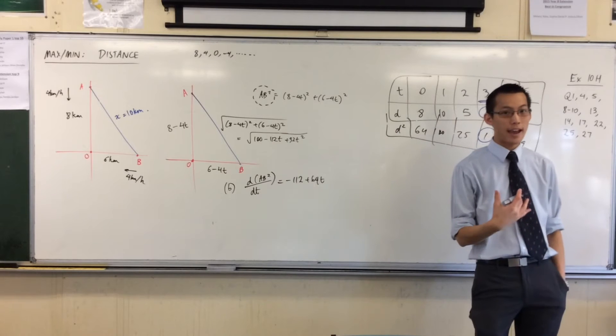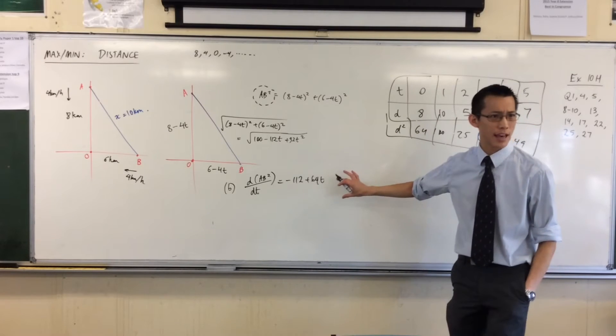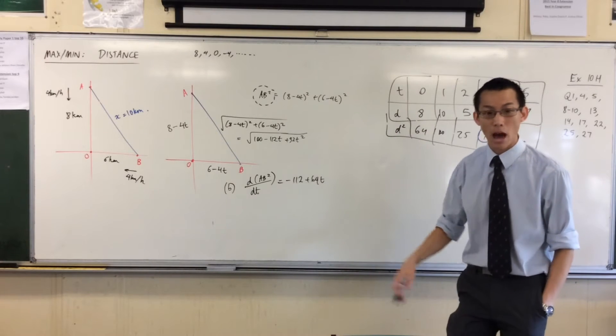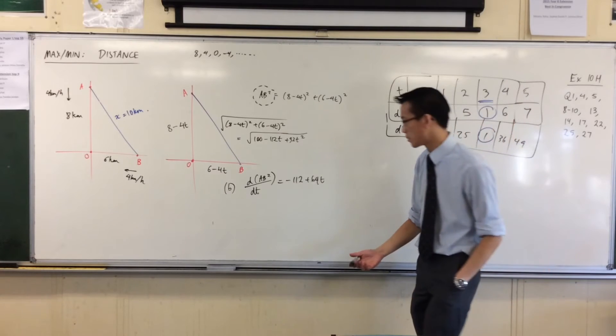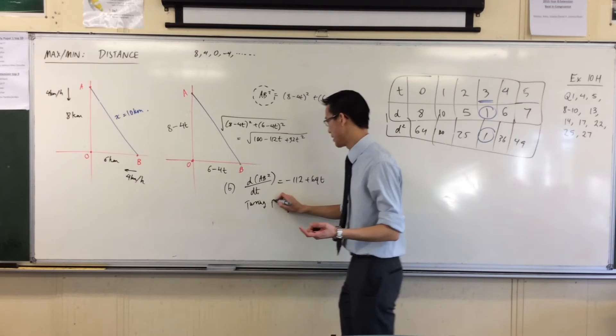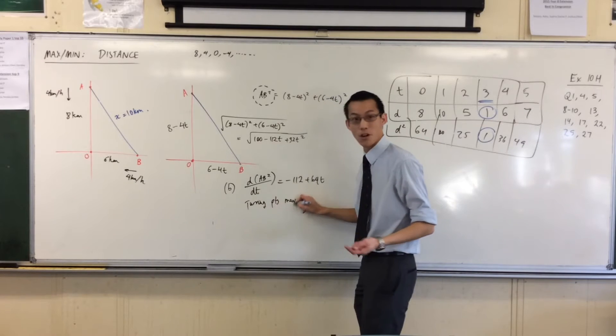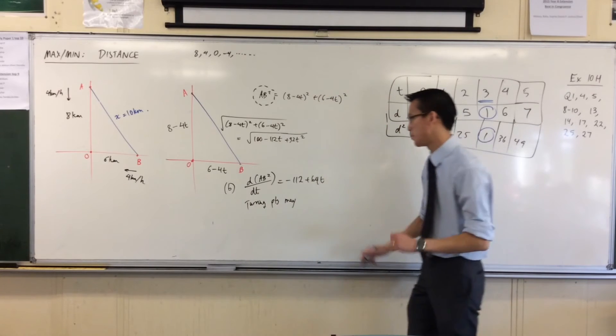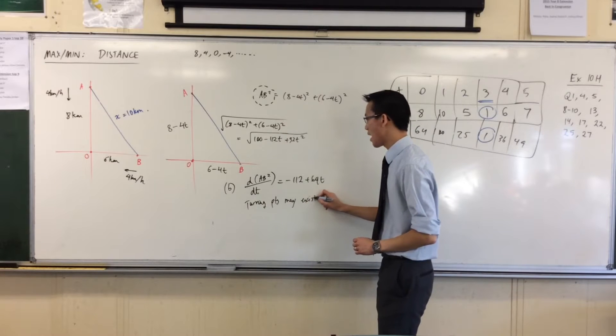It looks to me like it'd be minus 112 plus 64t. Now, I want to find, what do I want to find? What was the point of doing that? I want turning points, right? Turning points are what I'm after. So I will say turning points may exist, because I don't actually know yet. I'm just solving for the derivative at zero. May exist when that's zero.